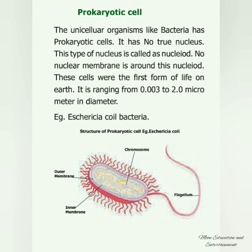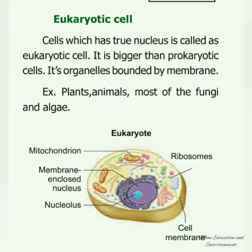The cells were the first form of life on Earth. Eukaryotic cells have a true nucleus and are bigger than prokaryotic cells. Their organelles are also bounded by a membrane. Eukaryotic cells are seen in plants, animals, most fungi, and even algae.